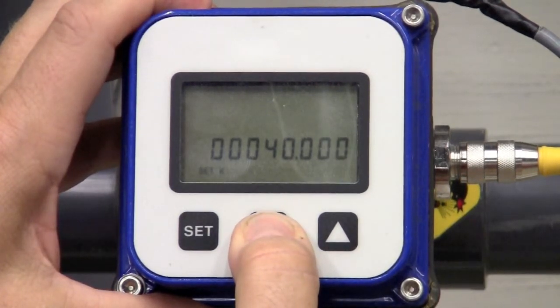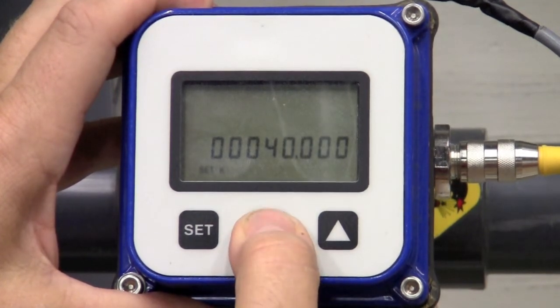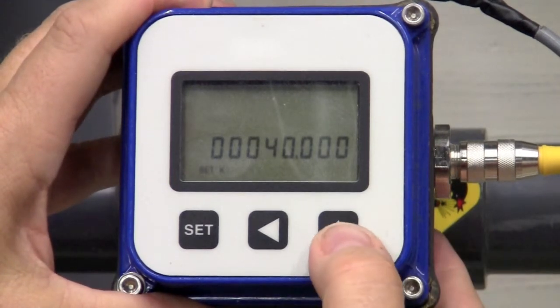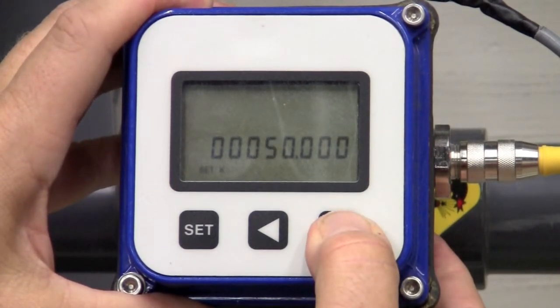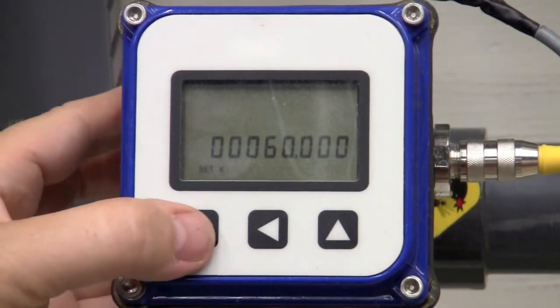I use the left arrow key to move the cursor to the left, and I'll put it right on the 4 where the 4 is flashing. Then I use the up arrow key, and I can change that to 60. And if that's the value you want, you hit Set.